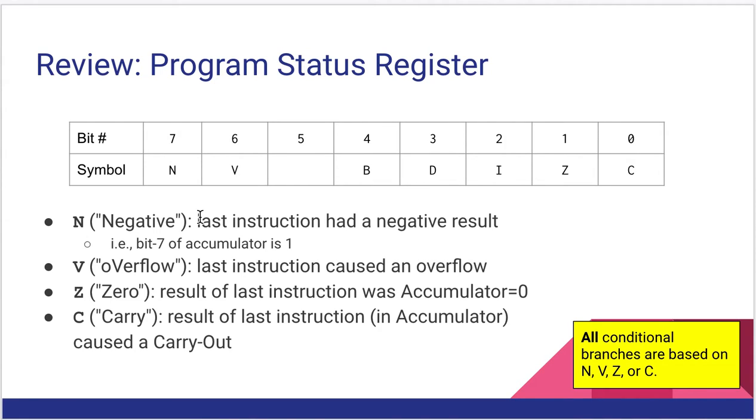If you recall, the status register is an 8-bit register, and each bit represents some particular state the last instruction caused in the CPU. The four we care about are the N, V, Z, and C bits—bits 7, 6, 1, and 0 respectively. We pretty much ignore the others.